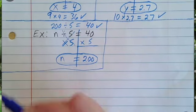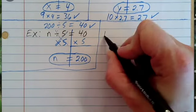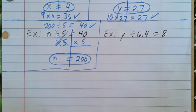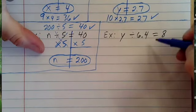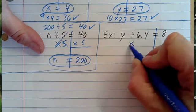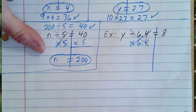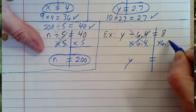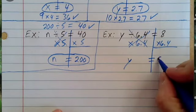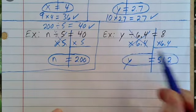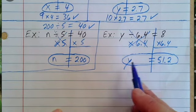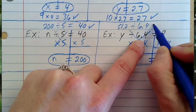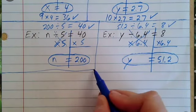The next example is y divided by 6.4 equals 8. To solve for y, I need to get rid of the divide by 6.4, so I multiply by 6.4 — the opposite of dividing. That cancels it out and gets y by itself. Whatever I do to one side I have to do to the other, so multiply both sides by 6.4. 8 times 6.4 gives me 51.2 on my calculator. Check: 51.2 divided by 6.4 equals 8. It works — that's how I know I'm correct.